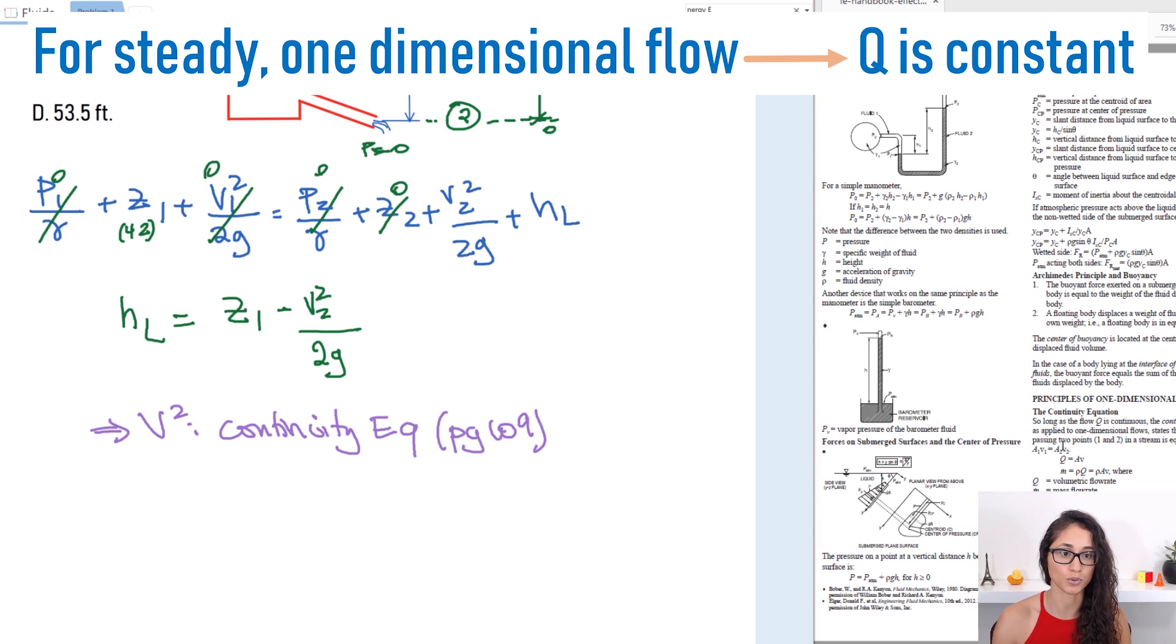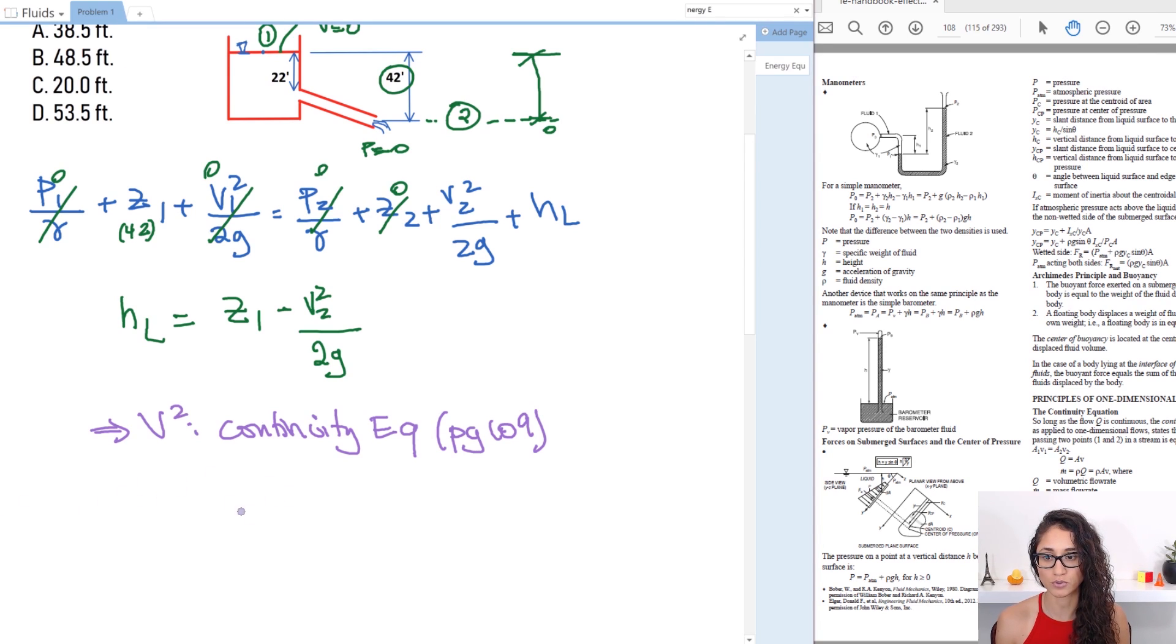So let me write it down so we have A2 V2 is equal to A1 times V1 and this is equal to A2 times V2. And this is equal to the flow rate because it's constant so for us to solve for V2 what we're going to do is we're going to do V2 is equal to Q divided by A2.